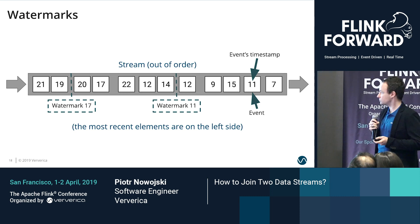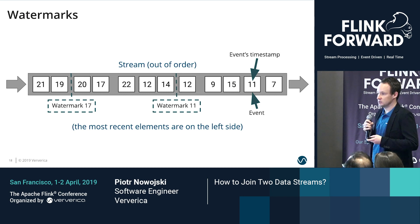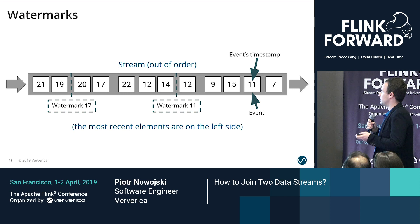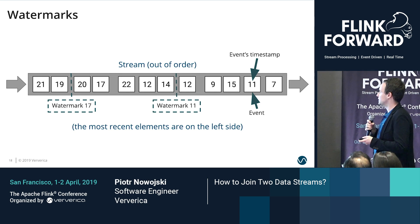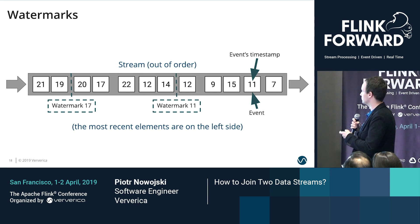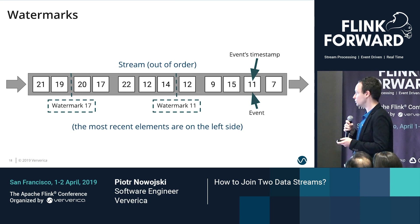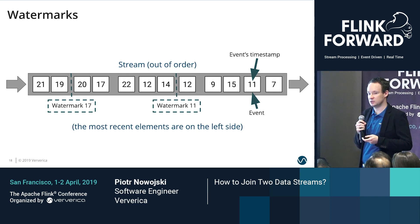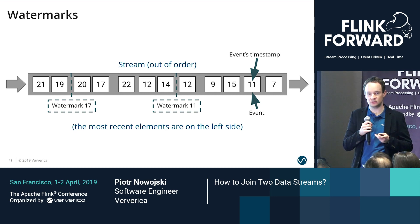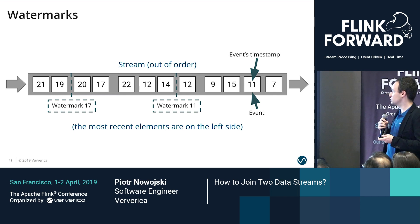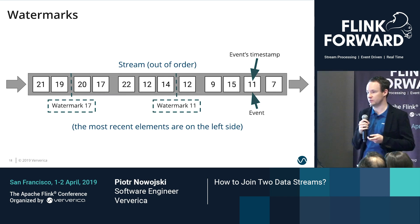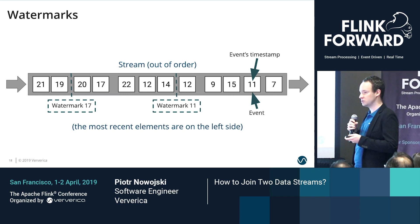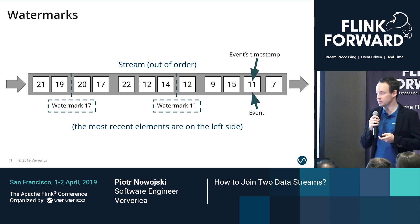If our stream might be out of order, and our events have some assigned timestamp — as we can see in the example: 7, 11, 15, 9, 12, and so on — then watermarks are a kind of metadata traveling within the data stream. They tell us the minimal value of the timestamp we can expect in the future from this stream. So once we process a watermark with value 11, we can assume that all future records will have a timestamp of 12 or higher.